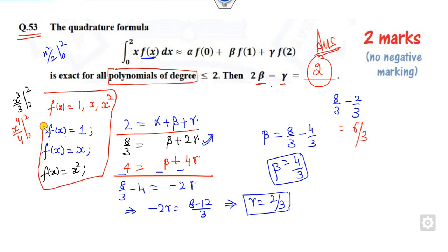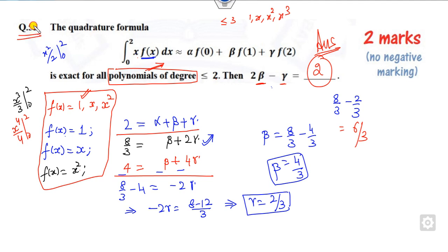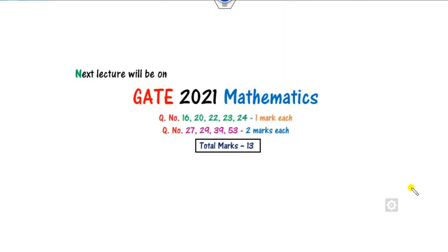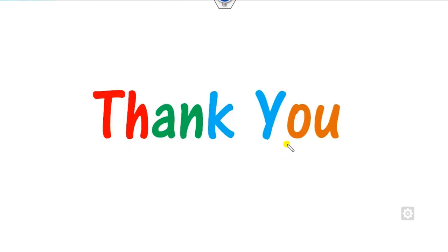Both questions are solved using the same technique. Remember this useful tip: whenever there is a polynomial of degree n, always consider the standard basis {1, x, x², ..., xⁿ} and proceed similarly. Questions 52 and 53 are two marks each — you can get four marks without much effort. I hope you enjoyed this. We will see more GATE mathematics questions in the next class. Share the video with your friends. Best of luck, happy learning!